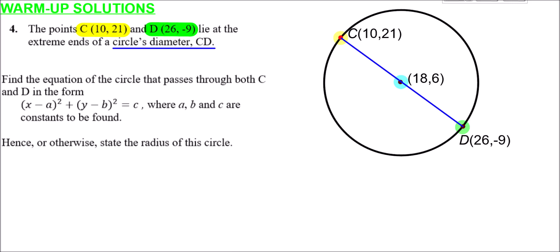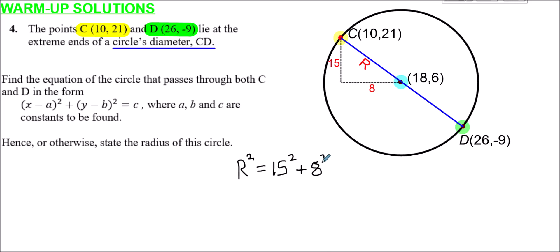Now we find the radius — the distance from C to the center. The vertical drop from y = 21 down to y = 6 is 15, and the horizontal distance from x = 10 to x = 18 is 8. Using Pythagoras: r² = 15² + 8² = 225 + 64 = 289.